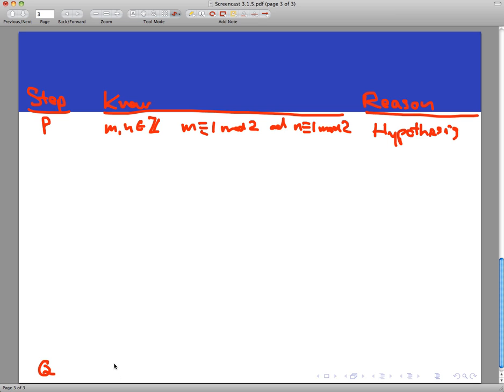And the final line down here, the conclusion is going to be that M times N plus 7, let me parenthesize that for clarity, is going to be congruent to 0 mod 2. And again, we don't really know exactly how that's going to happen, probably by definition or something like that. So we have our hypothesis stated and our conclusion written out.